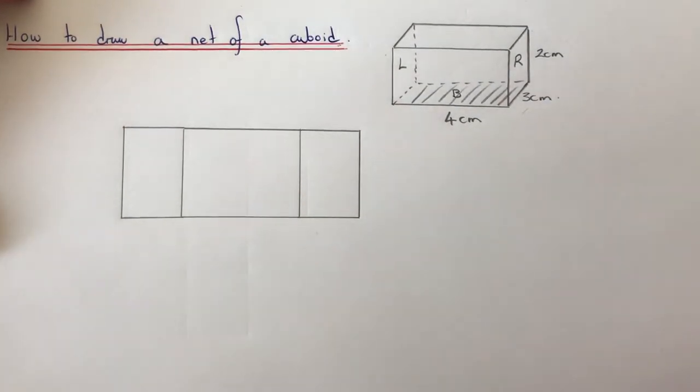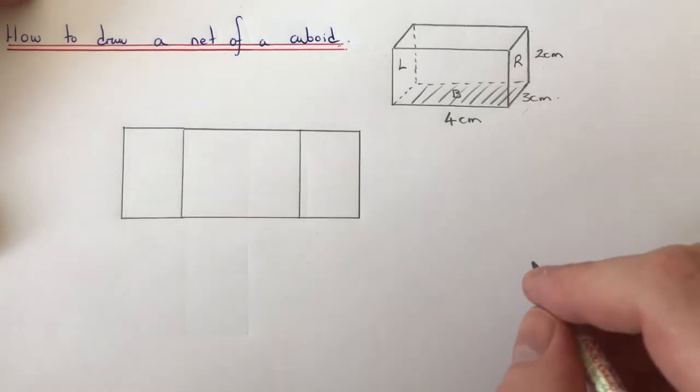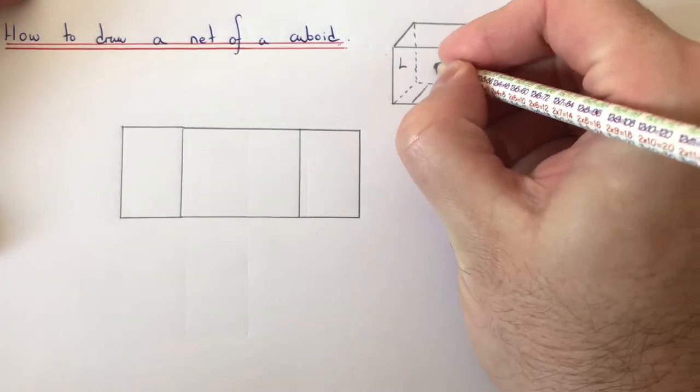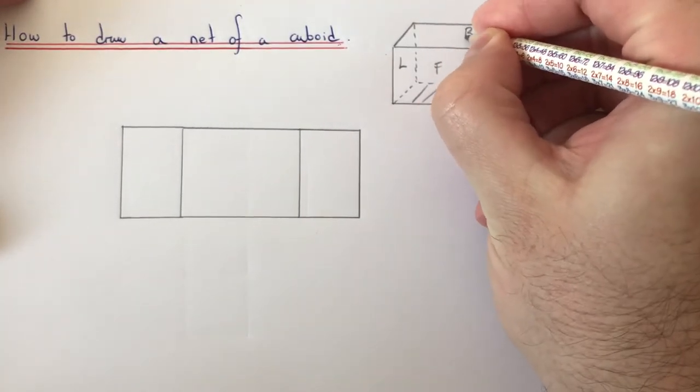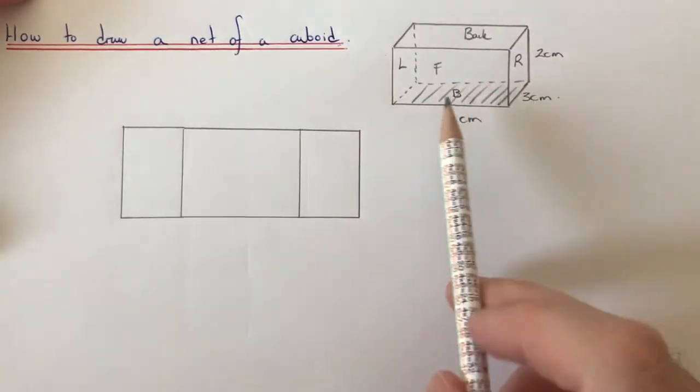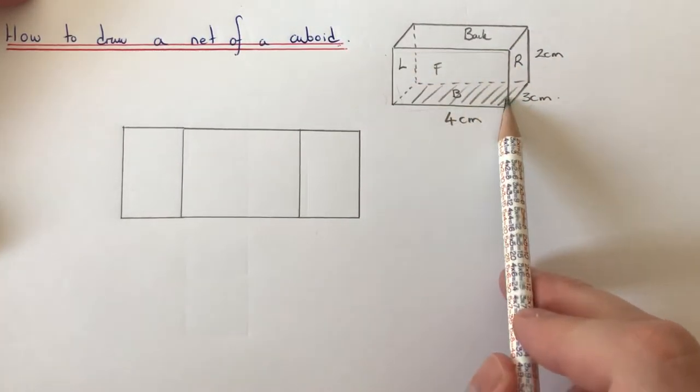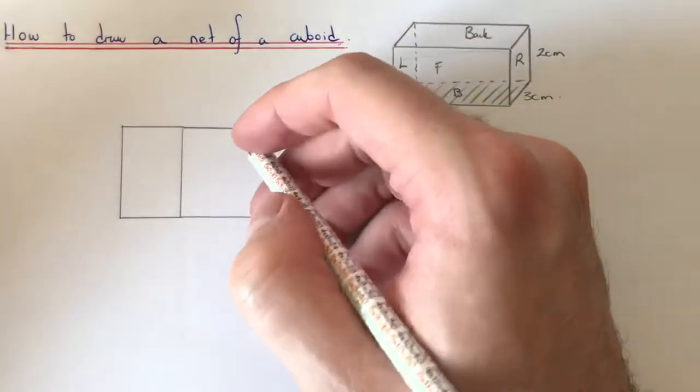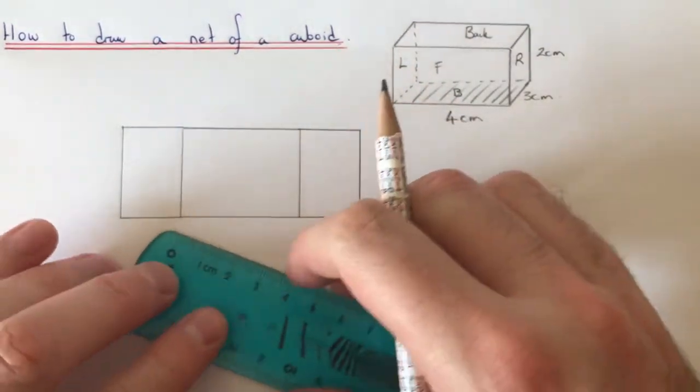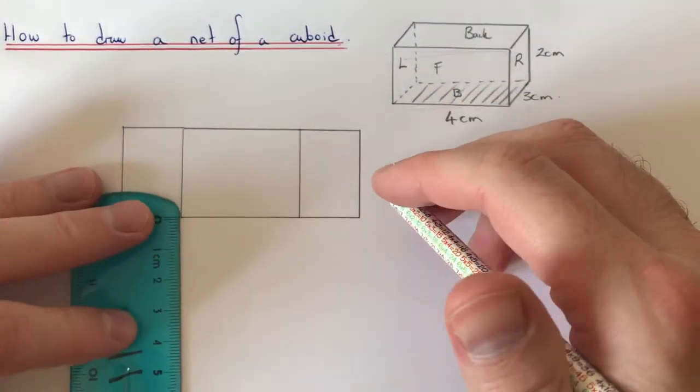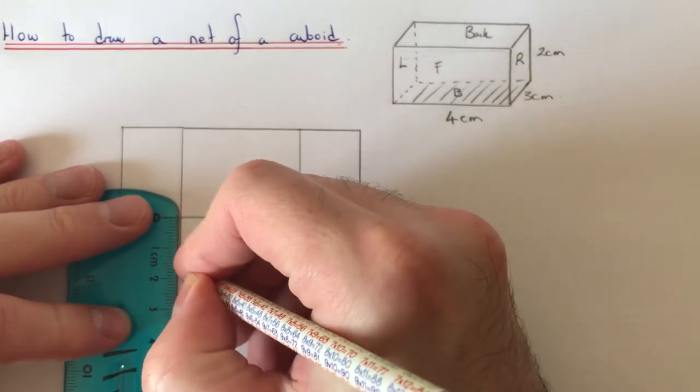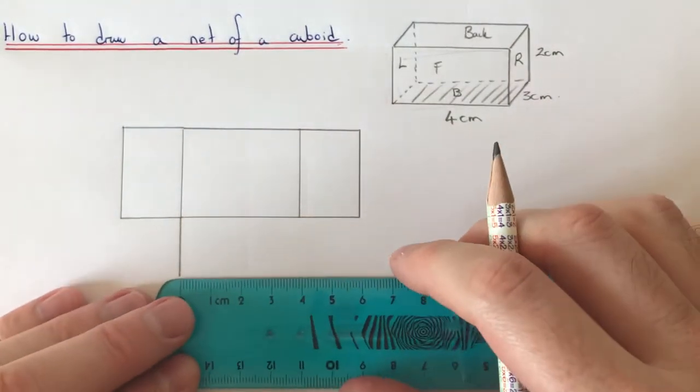Okay, so then let's do the front and back of the box. So the front and the back is a four by two rectangle. So I've already got the four here, so if we do two centimeters out.